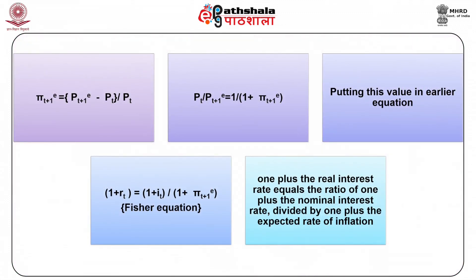Continuing from the above discussion, if the expected inflation rate is denoted by π_(t+1)^e, then given there is only a one-commodity economy, this can be written as: π_(t+1)^e = (P_(t+1)^e − P_t) / P_t. This implies P_t / P_(t+1)^e = 1 / (1 + π_(t+1)^e). Putting this value into the earlier equation, we get: 1 + R_t = (1 + I_t) / (1 + π_(t+1)^e). This is popularly known as the Fisher equation.